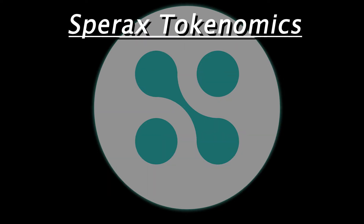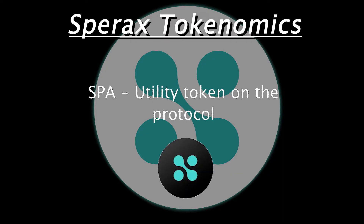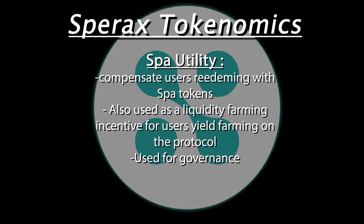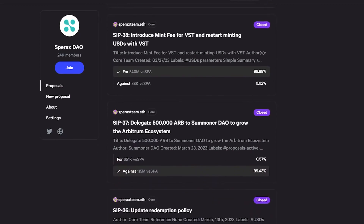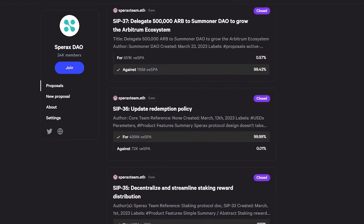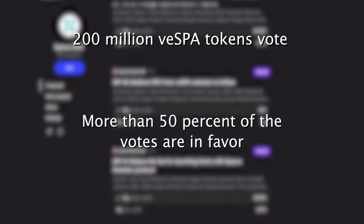Next, let's cover how Sparex's tokenomics work. Sparex uses their SPA token to accomplish a few different functions on the protocol. One of these functions is to compensate users redeeming their USDS with SPA tokens in case USDS becomes under-collateralized. The SPA token is also used as a liquidity farming incentive and is the key to unlocking governance for the Sparex protocol. By locking up SPA tokens for VE SPA — or Vote Escrow SPA — users will be able to vote on governance proposals that alter elements of the protocol. Currently, governance is done off-chain, and users who want to come up with new governance proposals can do so through the Sparex Discord. A governance proposal will only pass if at least 200 million Vote Escrow SPA vote on the proposal and more than 50% of the votes are in favor.